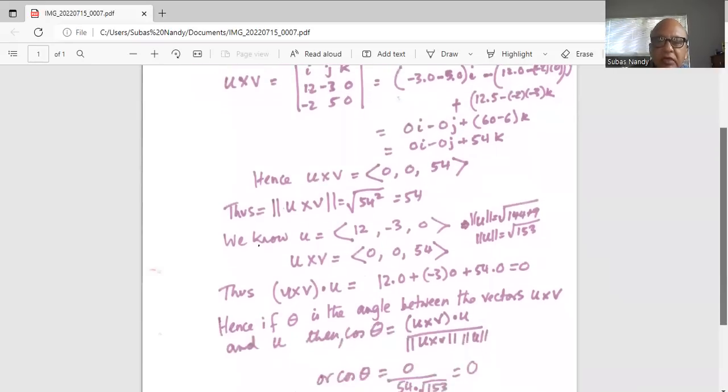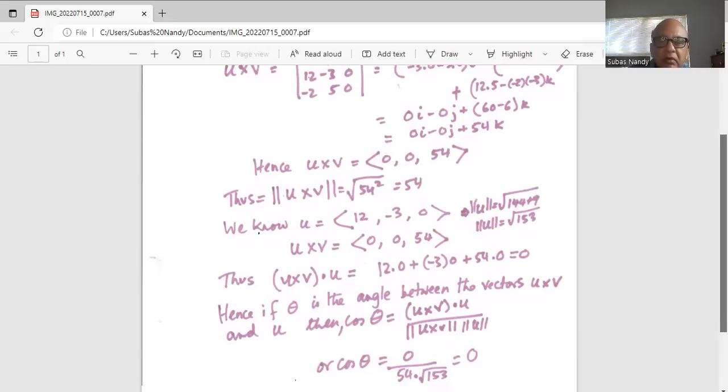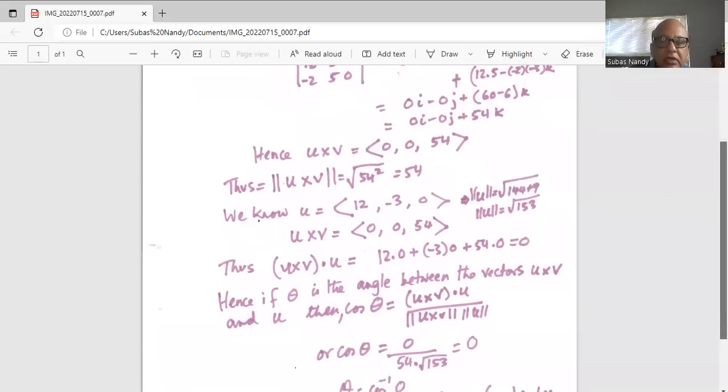Hence, if theta is the angle between the vectors u cross v and u, then cosine of theta is the u cross v dot product with u divided by magnitude of vector u cross v and magnitude of u.